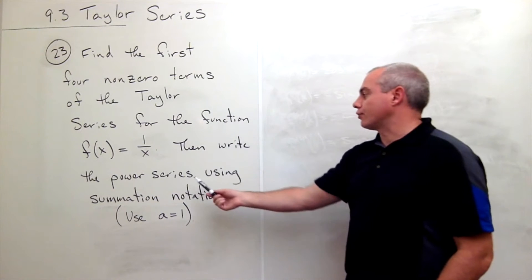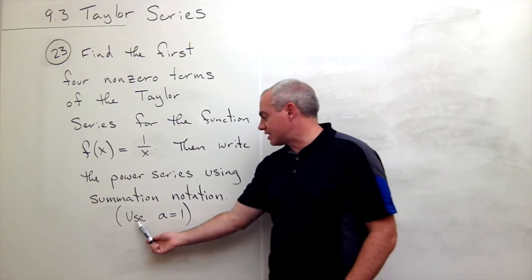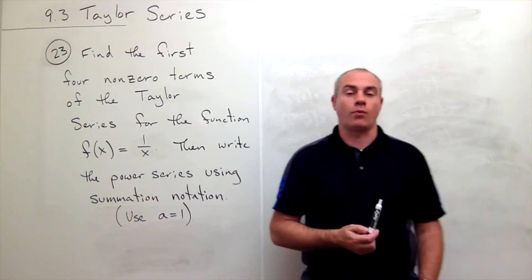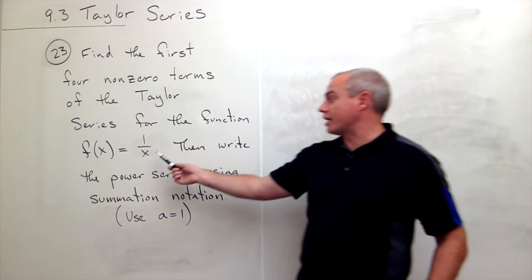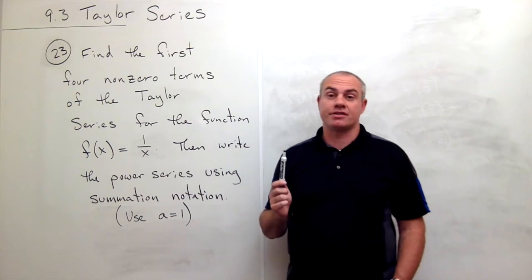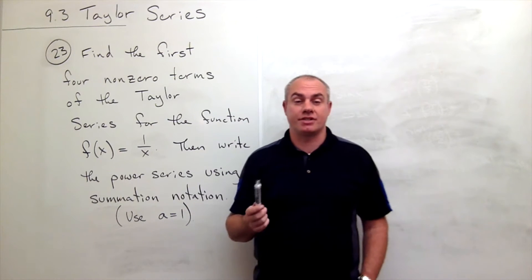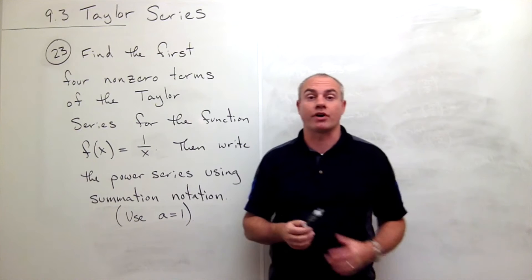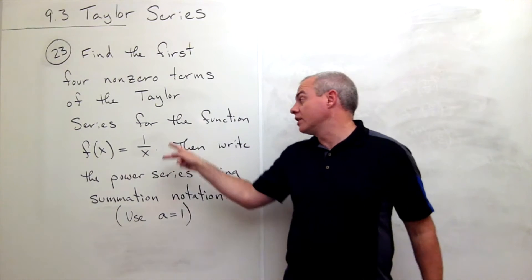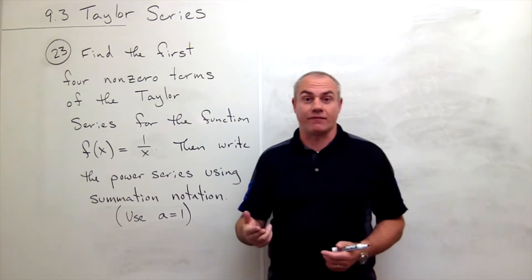Then we'd like to write the power series using summation notation where a equals one. So we're going to write this function as a Taylor series where a equals one, and it doesn't matter what Taylor series expansion you're doing—the first thing you want to do is write down your function and take some derivatives of that function.